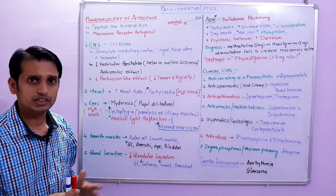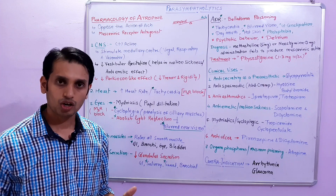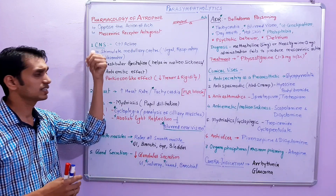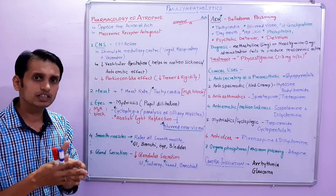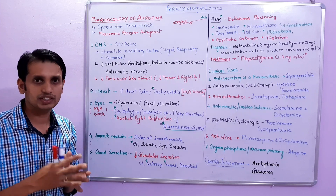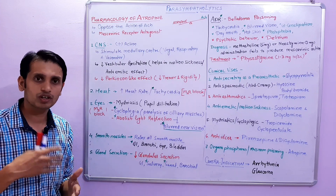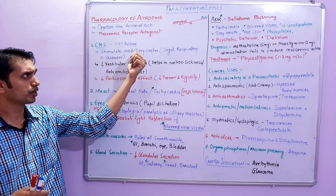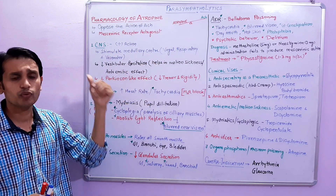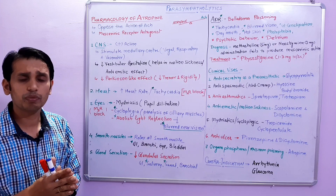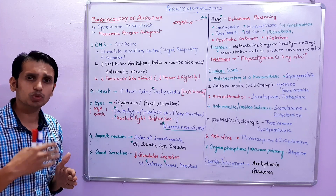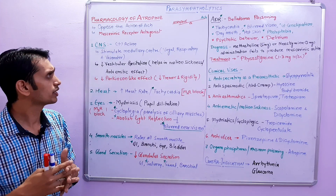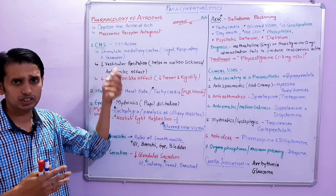Now come to the pharmacology of atropine. First is the CNS effects. Atropine shows stimulatory action in the CNS — it enhances some activity in the brain. Basically it stimulates the medullary centers like the vagal, respiratory, and vasomotor centers, so atropine shows CNS stimulatory activity and increases activity in these medullary centers.